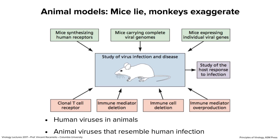Sometimes human viruses will replicate in mice — not always, but sometimes. Sometimes it's only a receptor you need to put in for a virus, and that will allow replication. An example is Zika virus: if you infect a normal wild-type adult mouse it will multiply and cause a viremia, but that's the end of it — there's no disease, no fever, the virus is cleared. But if you delete the interferon response — take out one gene from the mouse — then the infection is lethal: the virus replicates, gets into the CNS, and causes pathology and disease.